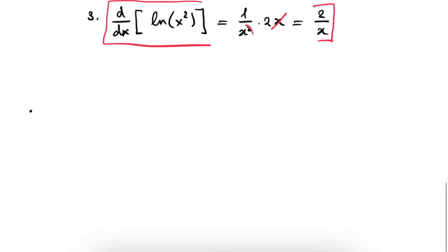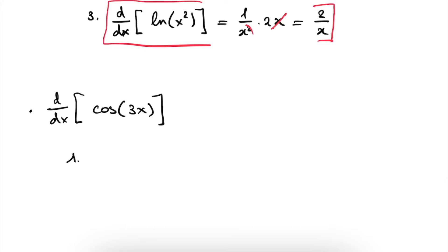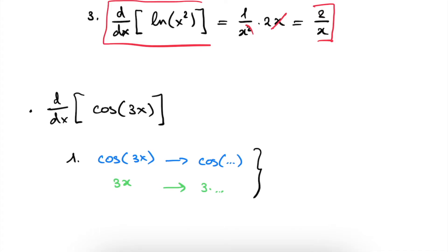The next exercise is d/dx of the cosine of 3x. Again, the first step is identifying functions. Which functions do we see here? Well, we have the cosine of 3x, which basically translates to the cosine of something — that's our first function. And we have 3x, which is basically the function 3 times something. And these work together in the sense that we have the cosine of 3 times x.